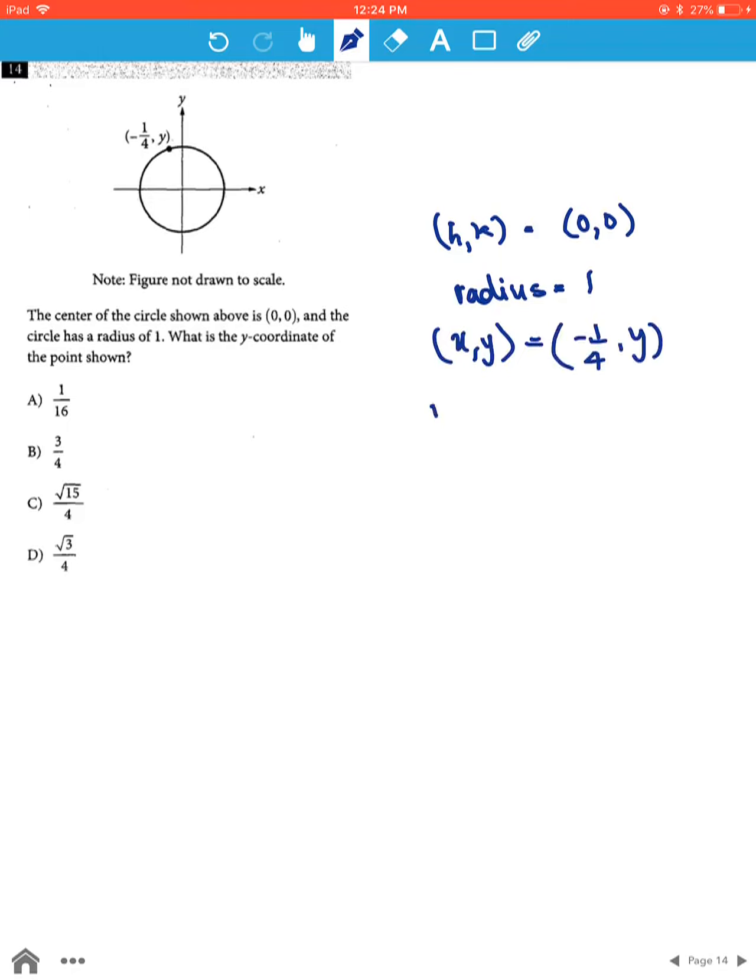Now the equation of a circle is x minus h the whole square plus y minus k the whole square is equal to r square. And plugging in these values in this equation we'll get negative 1 over 4 minus 0 the whole square plus y minus 0 the whole square is equal to 1.